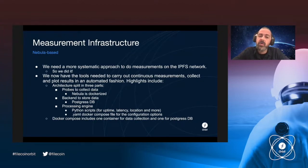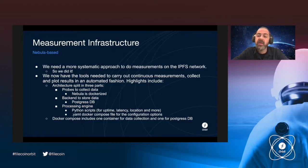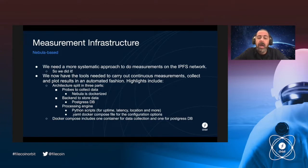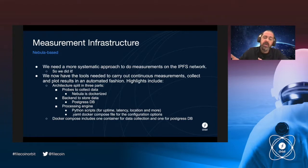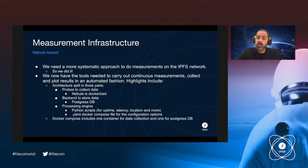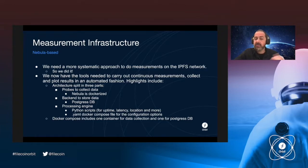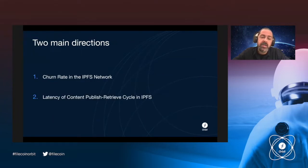We needed to design a more systematic approach to do measurements on the Web3 stack — including IPFS, Filecoin, and potentially other networks in the future. We now have tools for continuous measurements on network peers in a fully transparent way. Our architecture is split into three parts: probes to collect data, backends to store the data, and a processing engine to give us the information we need. Our crawler, Nebula, is now dockerized and can run at several different points around the globe.